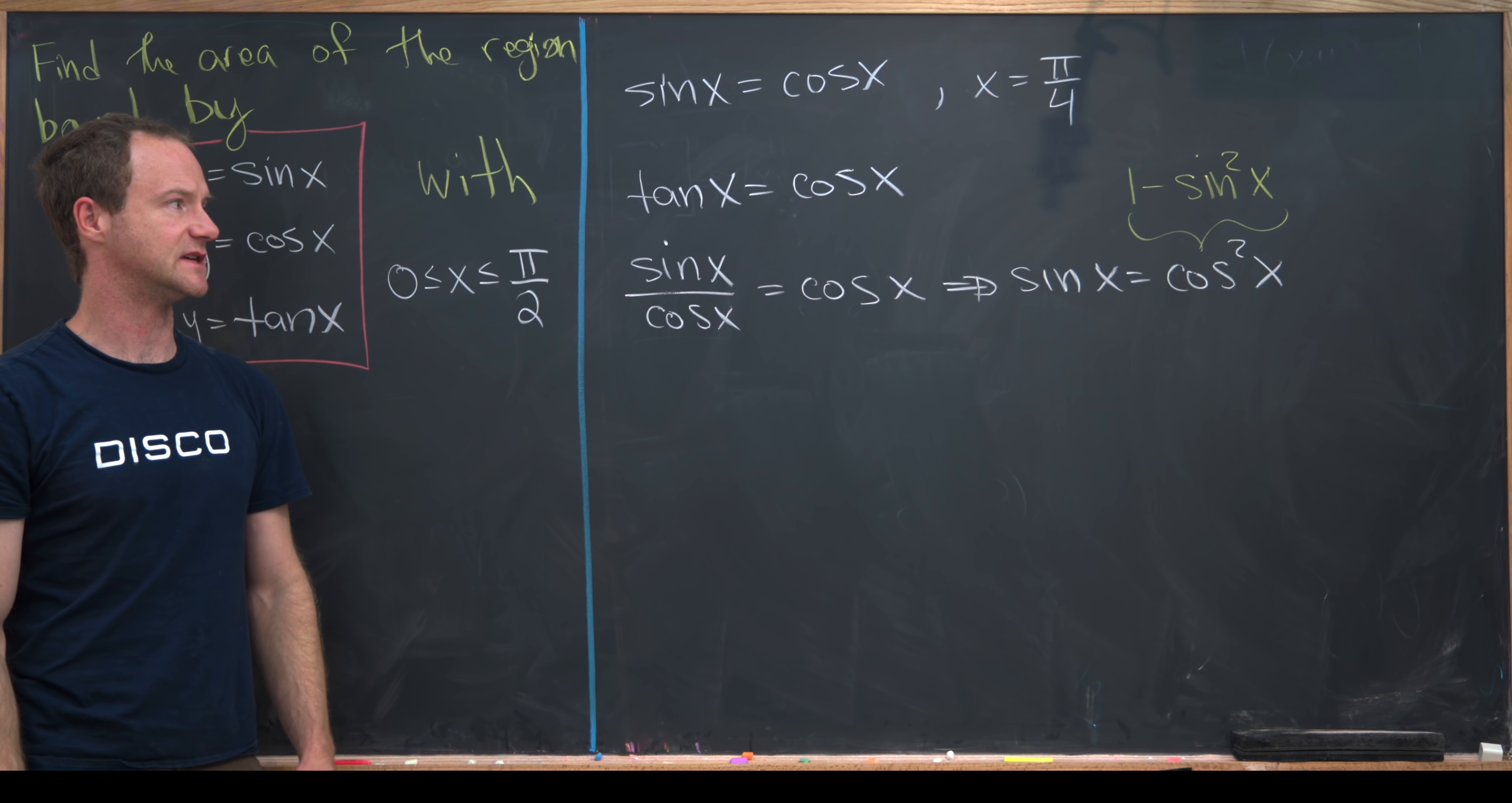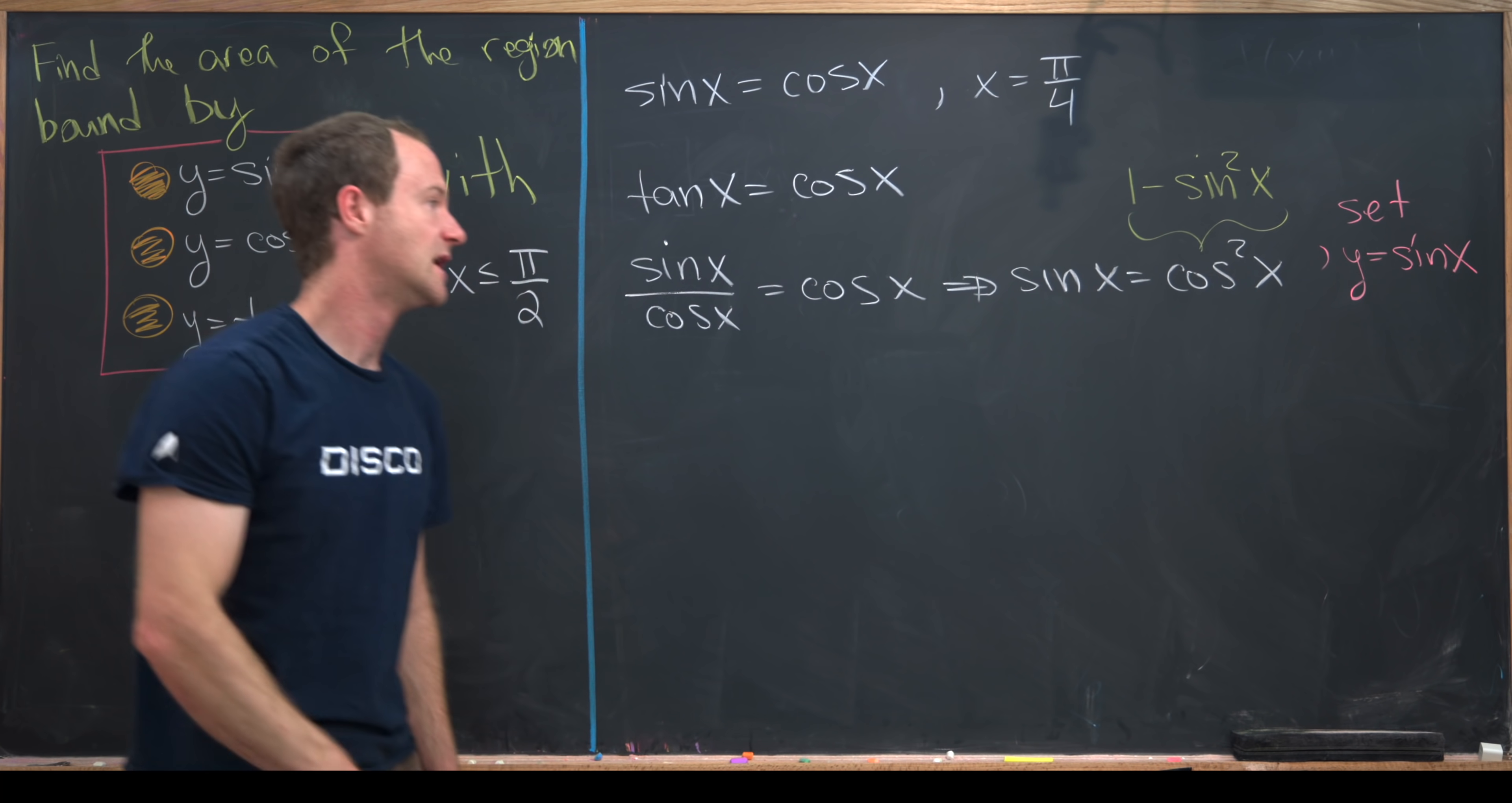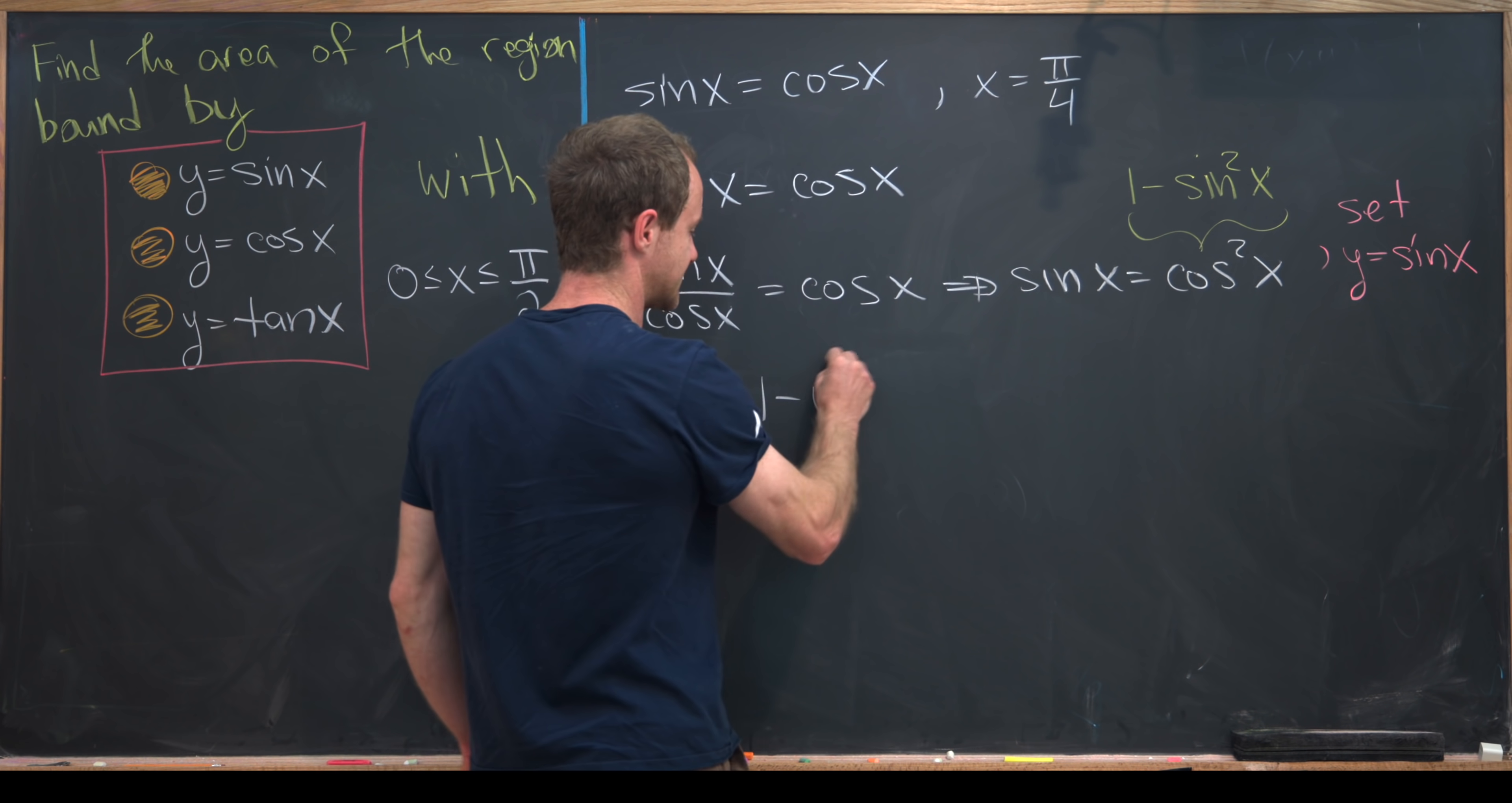After doing that, we see that we have a quadratic equation where sine is like the variable. So let's set y equal to sine of x, and notice that gives us the following quadratic equation: y equals 1 minus y squared.